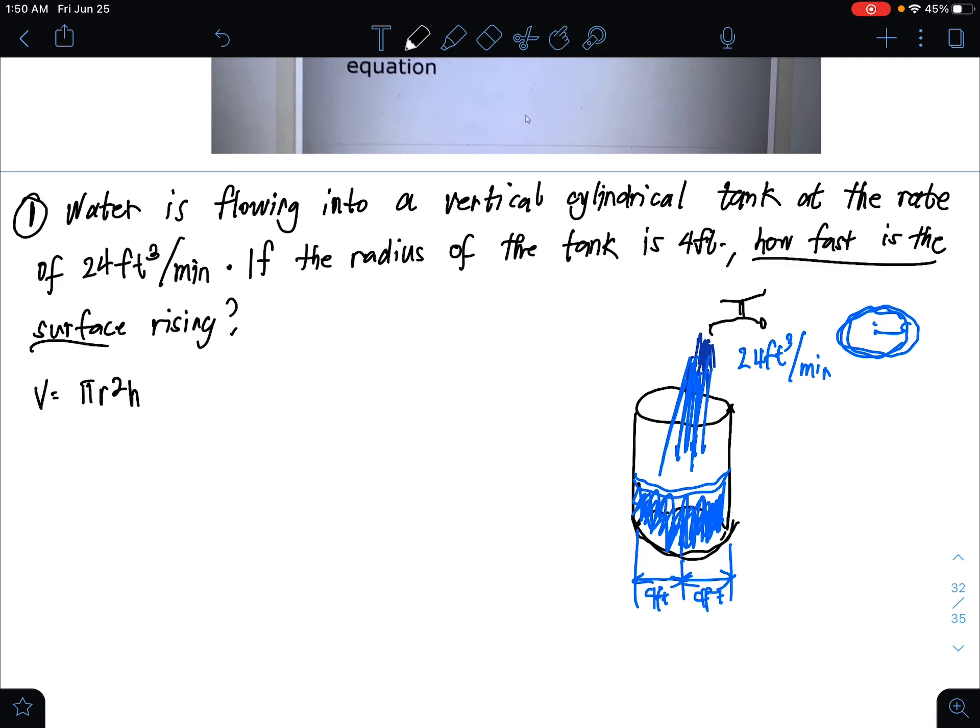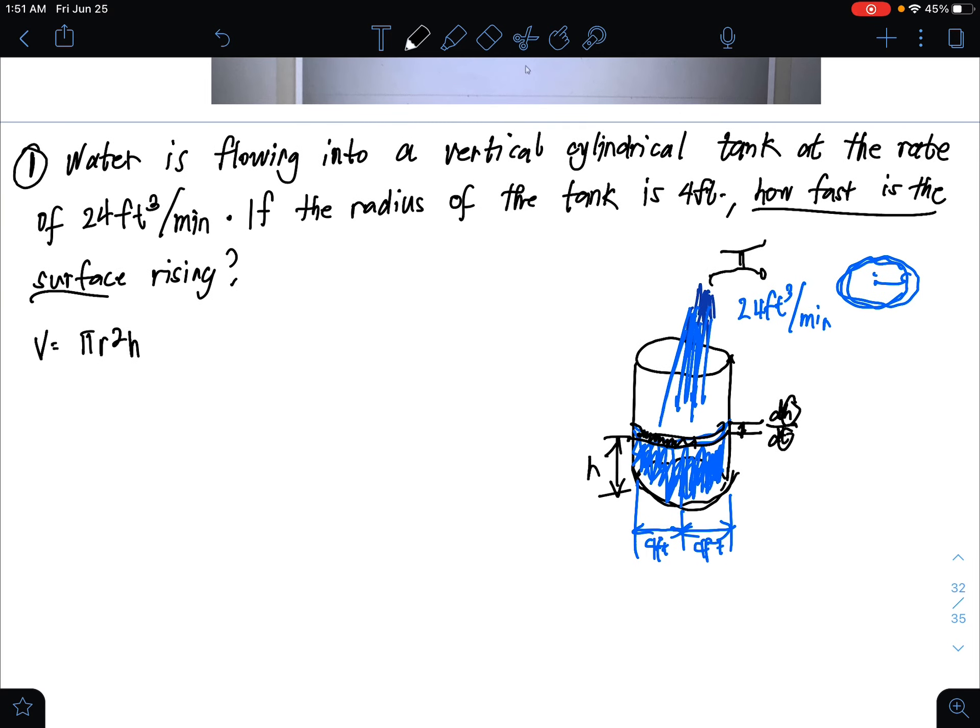Our problem is, how fast is the surface rising? How fast will the water rise? This is dh over dt. We are talking about height with respect to time. Therefore, dh over dt is what we're looking for. And the height of the water that rose, let's label that as h.